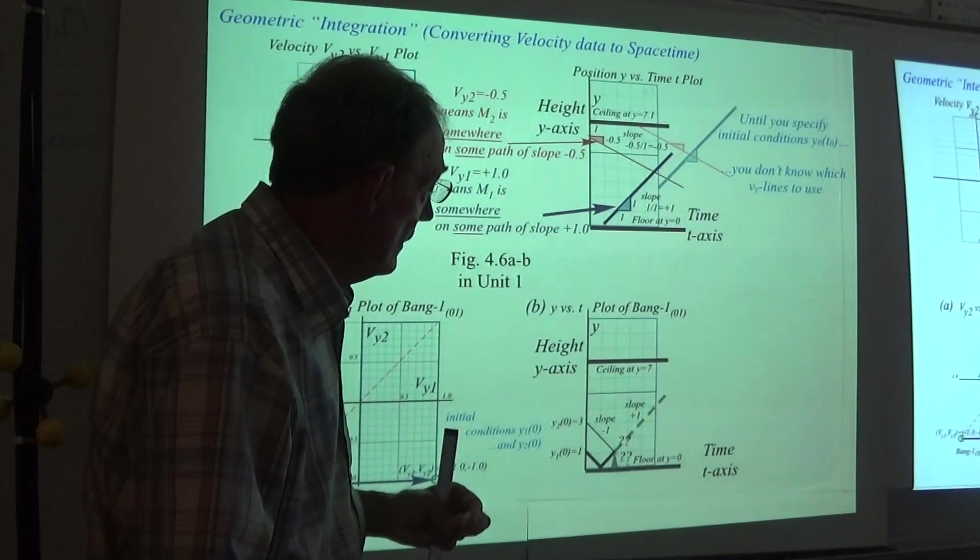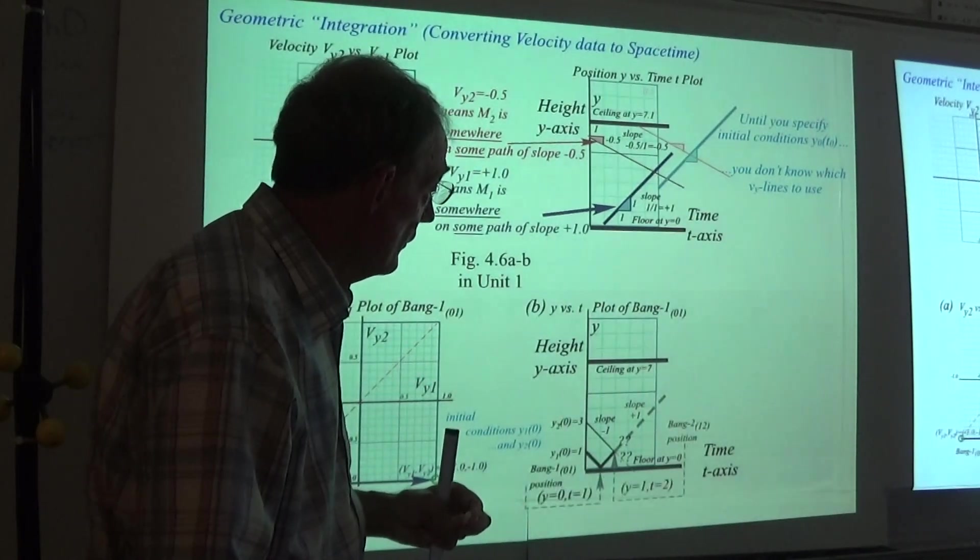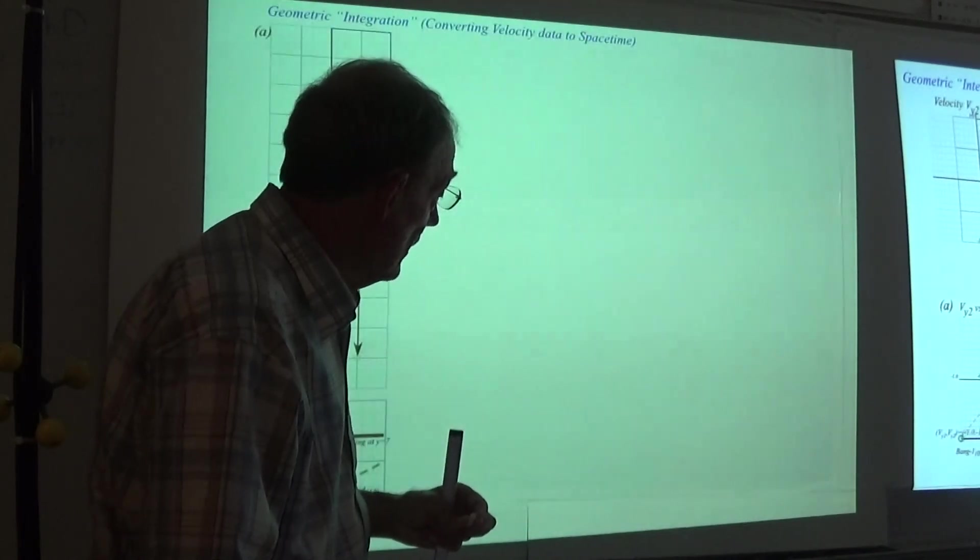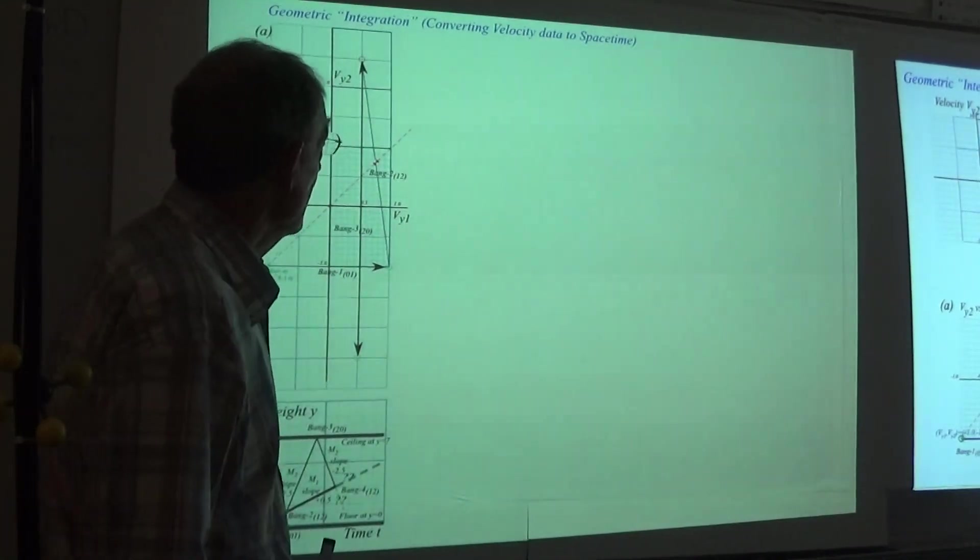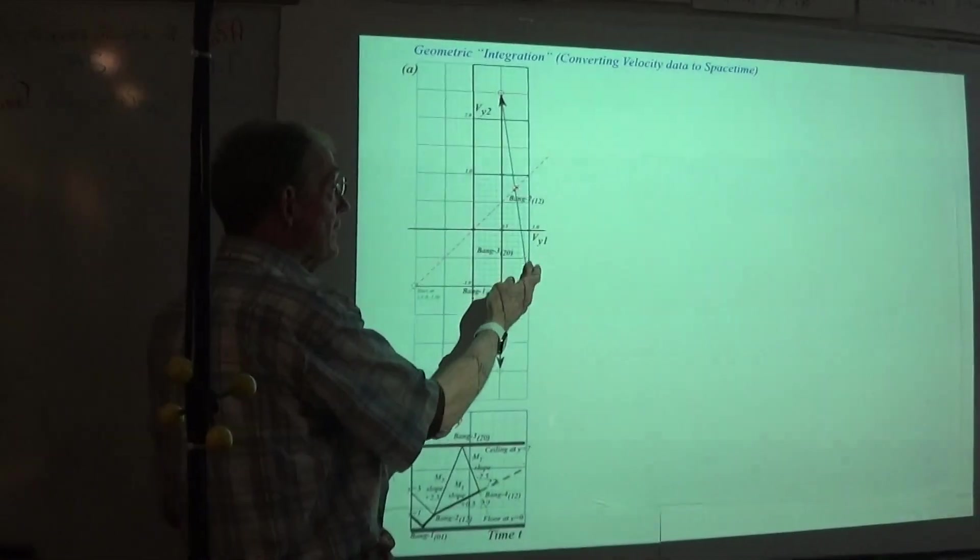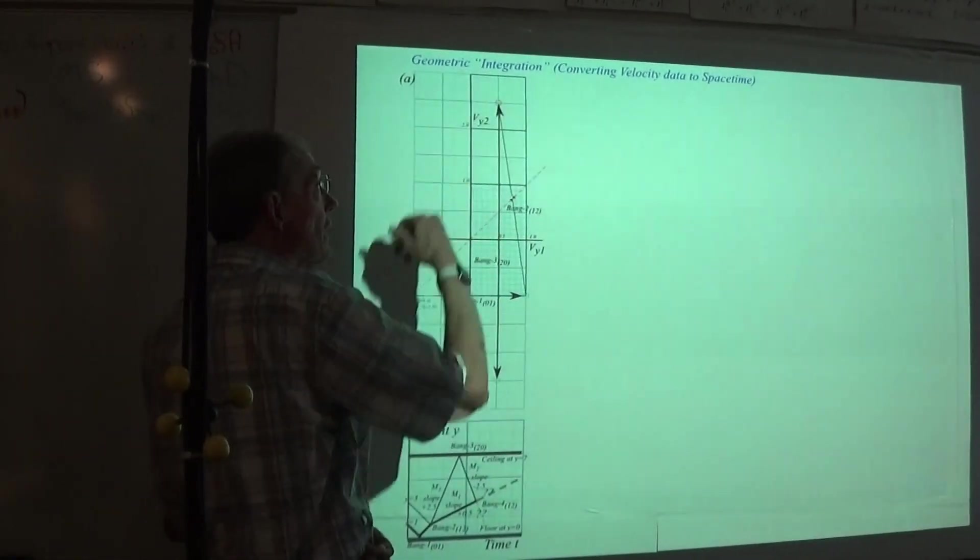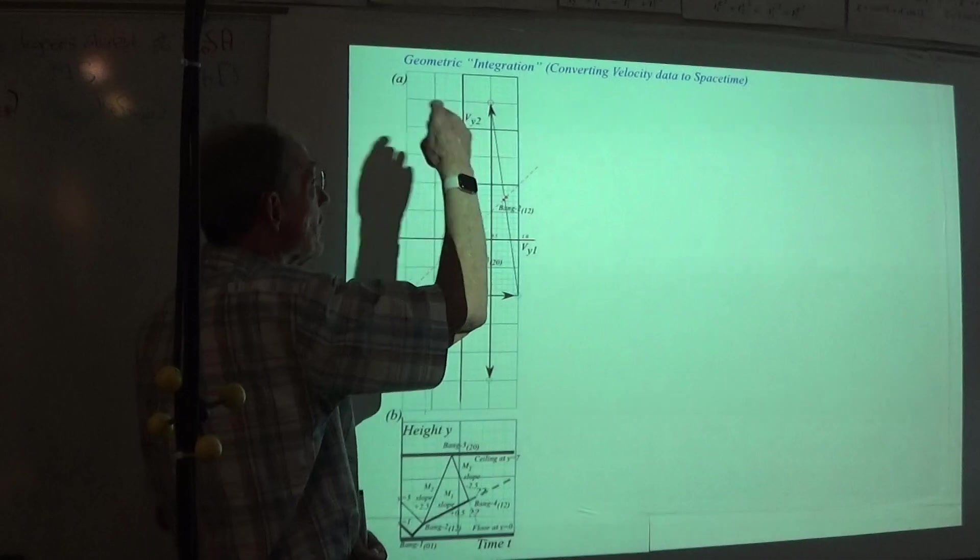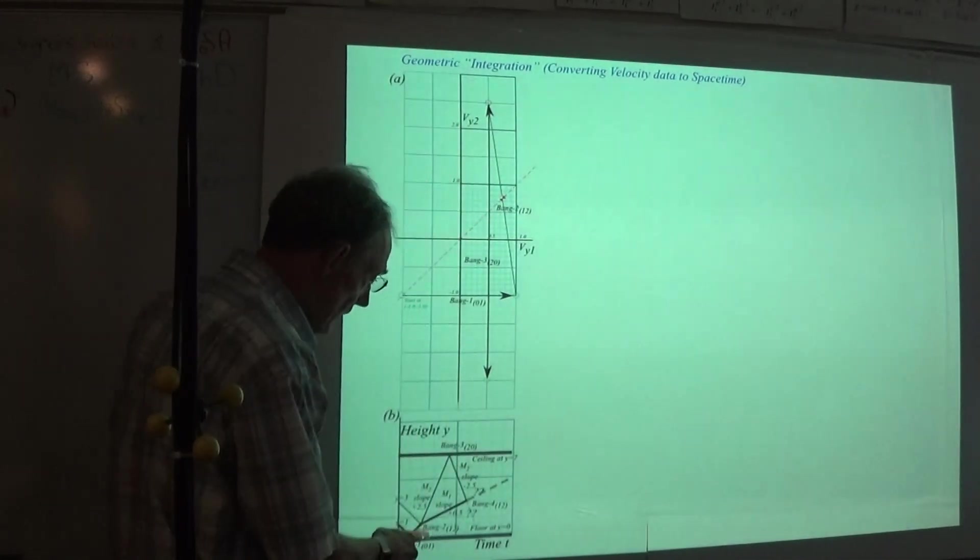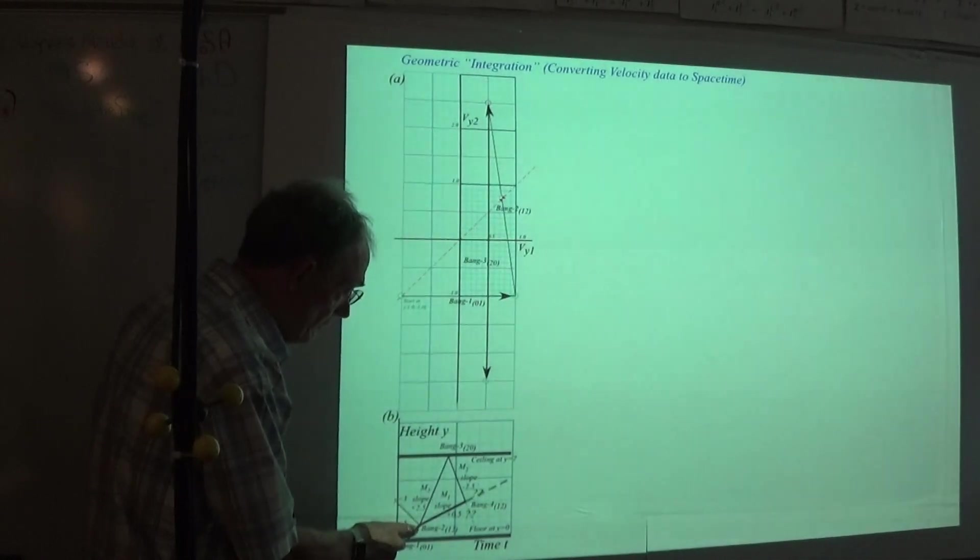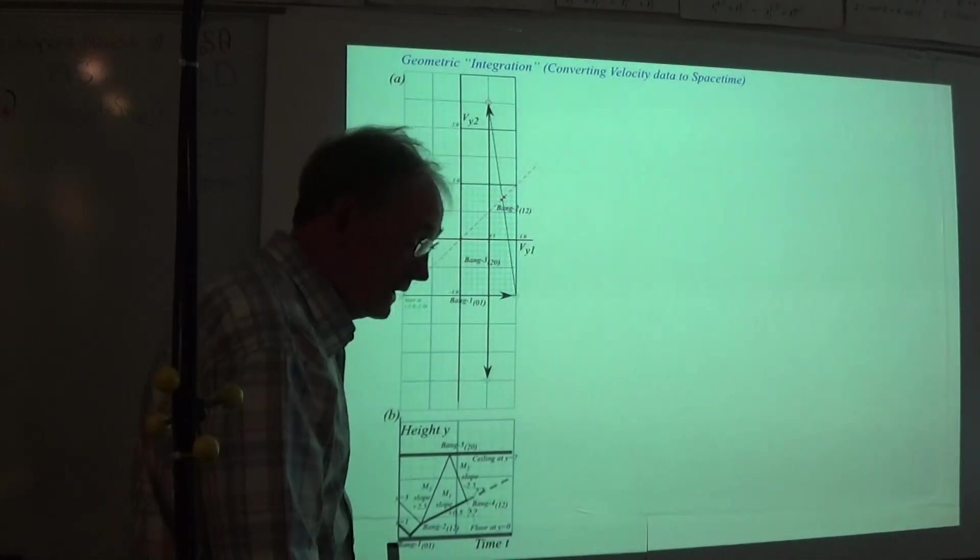Now the question of course is, what is the answer to that? And that's where you have to look at what we just did here, producing a 7 to 1 collision, winding up here with a velocity of 2.5. So we're going to have to be drawing a line with a slope of 2.5 right there.